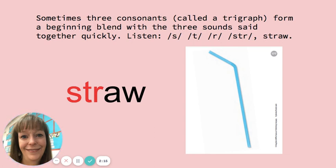Sometimes three consonants called a trigraph form a beginning blend, with the three sounds said together quickly. Listen. S, T, R. Stir. Strike.